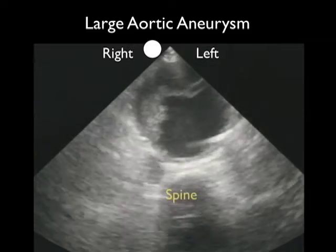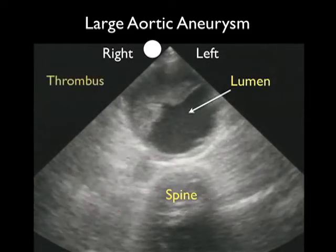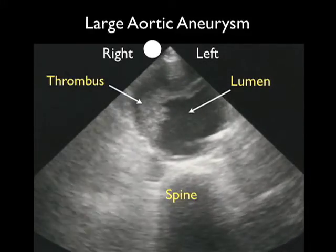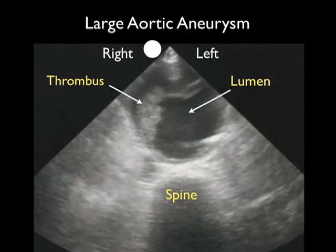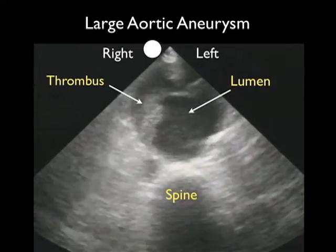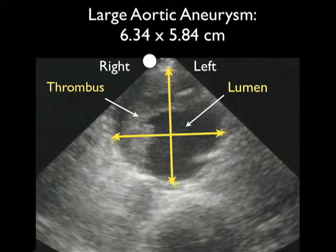This video clip shows another short axis orientation of a very large triple-A in a patient who presented to the ED with abdominal pain. We mark the spine as our landmark, and anterior to the spine we see a very large triple-A — notice the true lumen and the accumulation of thrombus substantially anterior to the true lumen. Placing our calipers from outer wall to outer wall in short axis configuration, we come up with an aneurysm of 6.3 by 5.8 centimeters, again meeting the criteria of a very large triple-A greater than 3 centimeters.